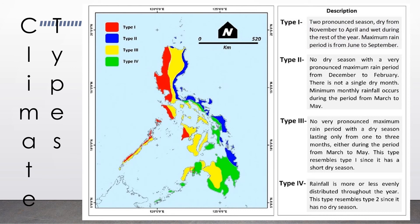For Type 3, there is no pronounced maximum rain period, with a dry period lasting only three months, from March to May. This type resembles Type 1 since it has a short dry season. Type 4 has rainfall more or less evenly distributed throughout the year, and resembles Type 2 since it has no dry season.